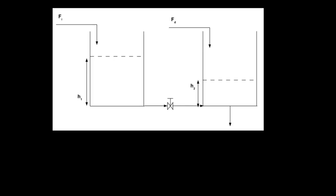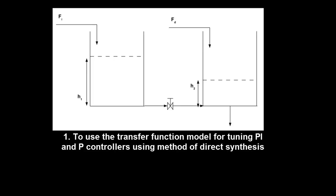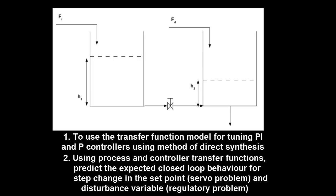The aim of this experiment is to use the transfer function models developed for tuning PI and P controllers using method of direct synthesis, and using process and controller transfer functions, predict the expected closed-loop behavior for step change in the set point and disturbance variable.